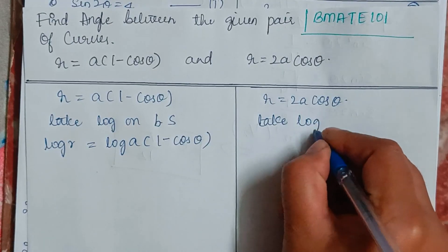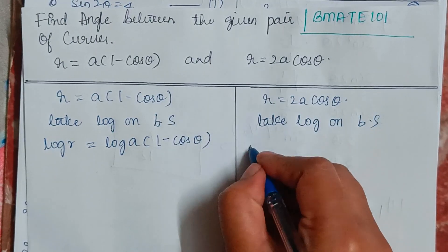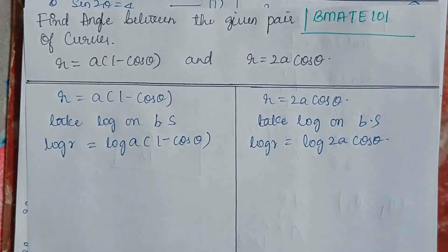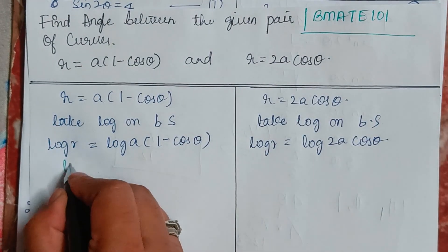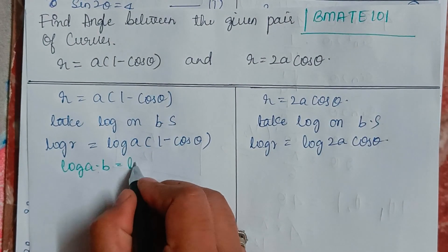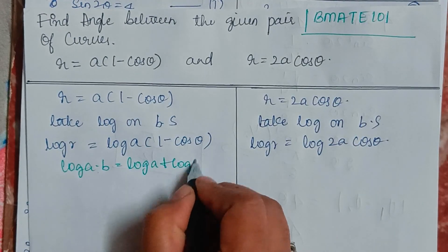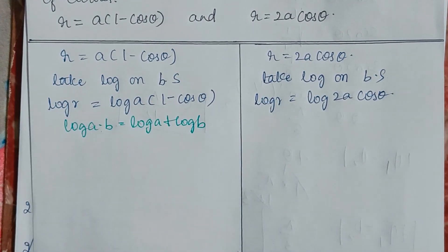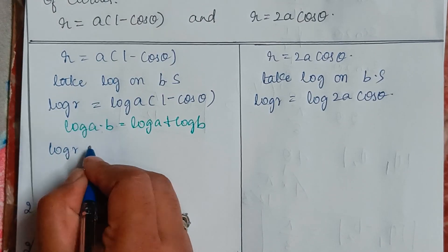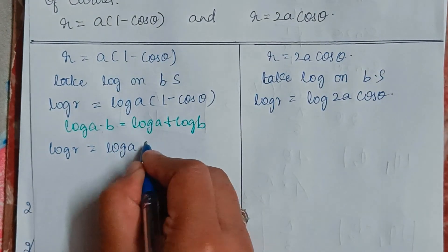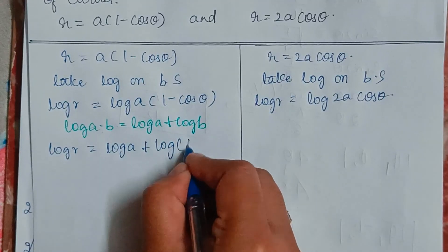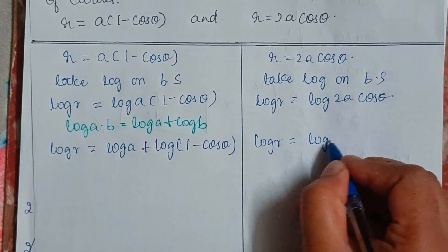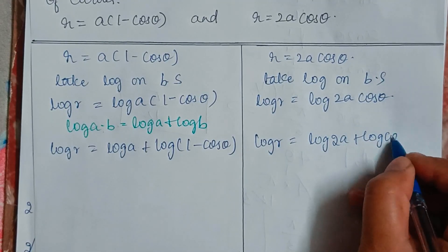Take log on both sides for the second curve as well: log R equals log 2A cos theta. We know that log of A into B is log A plus log B. So we will expand both equations using this formula. This gives log R equals log A plus log(1 minus cos theta), and log R equals log 2A plus log cos theta.